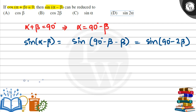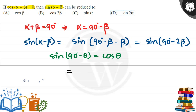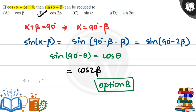Let's talk about a formula. We know that sin(90° - θ) equals cos(θ). Applying this, sin(90° - 2β) equals cos(2β). So the final answer is option B, that is cos(2β).